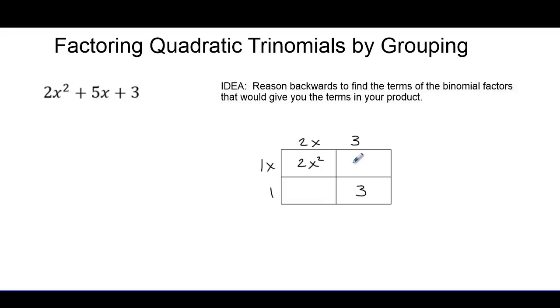1x times 3 gives us 3x, 2x times 1 gives us 2x, and sure enough the product inside is exactly what we were hoping for. And so we've found our factors. We'll add these two terms to give us one factor, and we'll add these two terms to give us the other factor. And our factors are 2x + 3, and it doesn't matter what order we write these factors, and 1x or just x + 1.